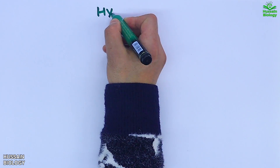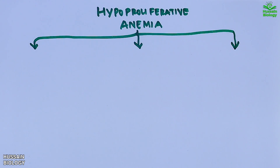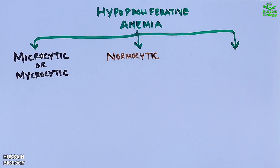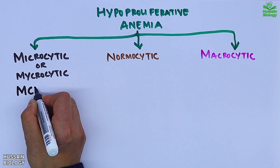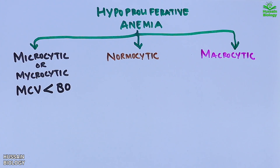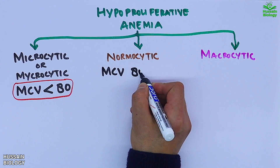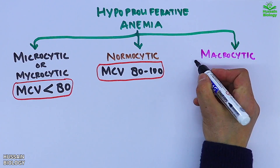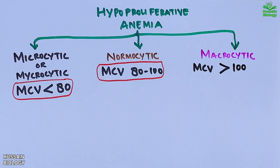Hypoproliferative anemia is divided into three types: microcytic, normocytic, and macrocytic anemia. In microcytic anemia, MCV (mean corpuscular volume) is less than 80 femtoliters. In normocytic anemia, MCV ranges between 80 to 100 fL. In macrocytic anemia, MCV is greater than 100 fL.